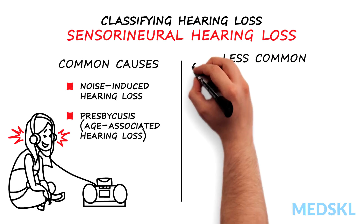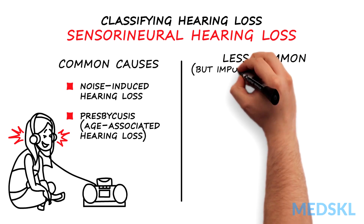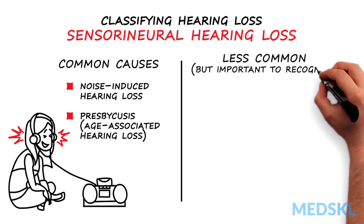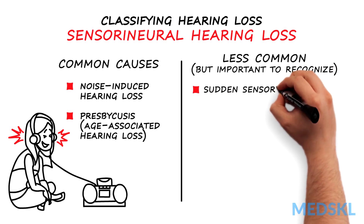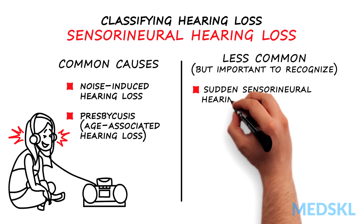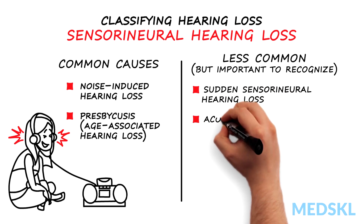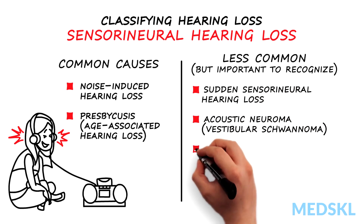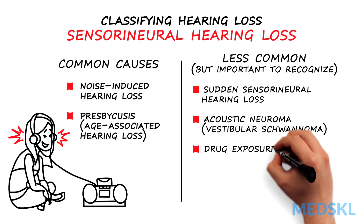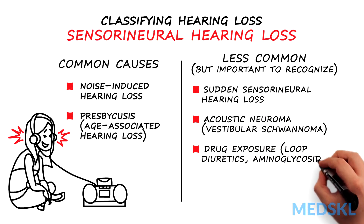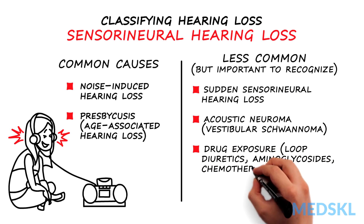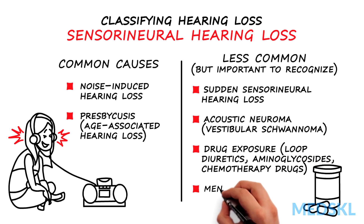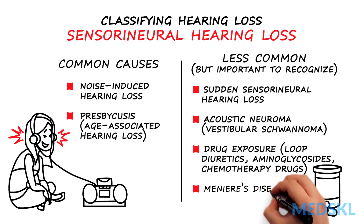Less common examples of sensorineural hearing loss that are very important to recognize include sudden sensorineural hearing loss, acoustic neuroma or, more accurately, vestibular schwannoma, drug exposure to loop diuretics, aminoglycosides, or chemotherapy drugs, and Meniere's disease.